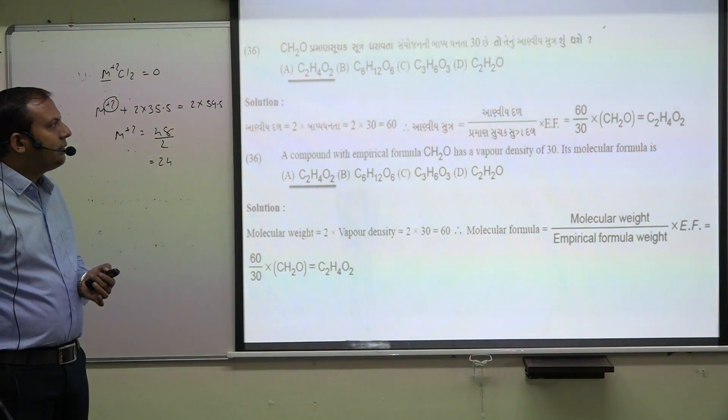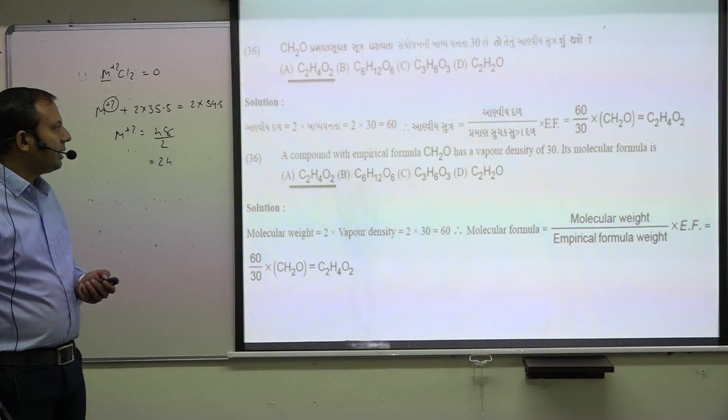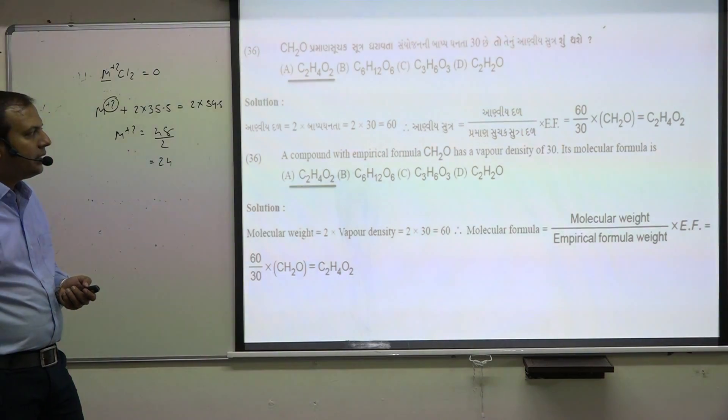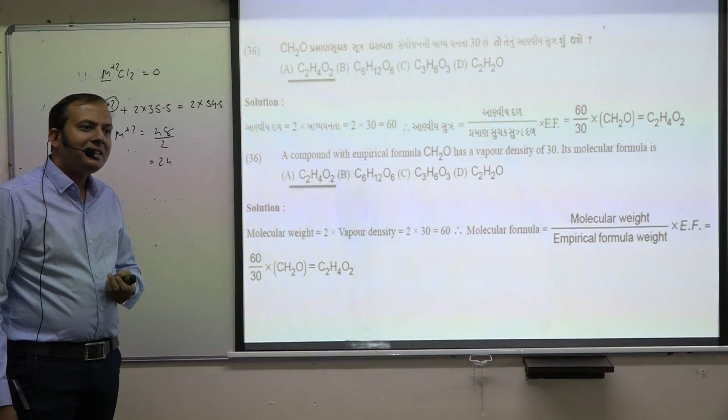CH2 has vapor density 30, so molecular mass is 60.